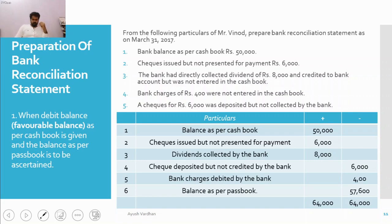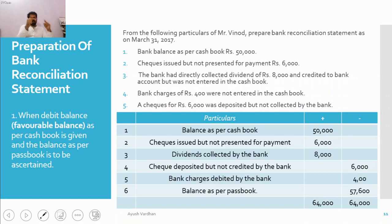The key rule is: first look at who is your target. How do we set the target for BRS? Look at the very first entry — is it cash book or pass book? If our first entry is cash book, then the target is pass book. If the first entry is pass book, then the target changes to cash book. In this particular example, we are starting with the cash book, so our target is pass book.